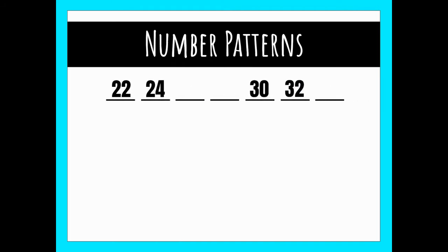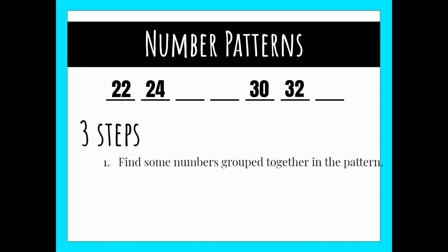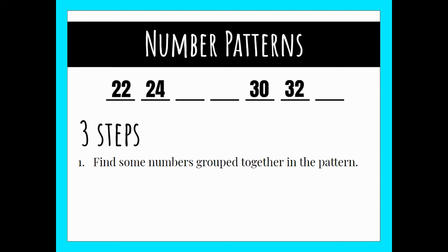There are only three steps to solve for those missing numbers. The first thing you want to do is find some numbers in your pattern that are grouped together. These numbers can help you solve for the missing numbers.